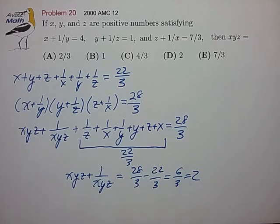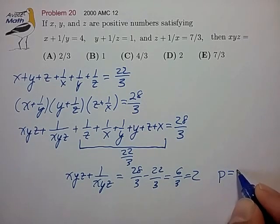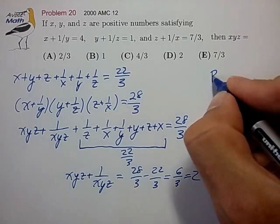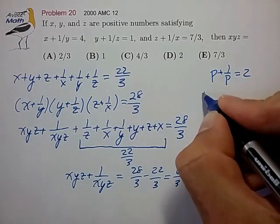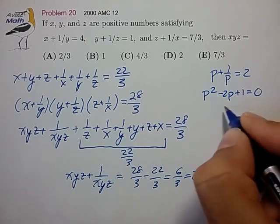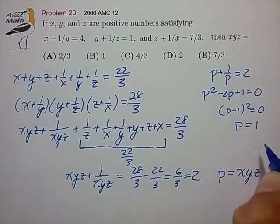If you can't actually see that, the more proper way is to make a variable substitution. Say p is equal to x, y, z. Substitute that in to generate the quadratic equation: p plus 1 over p is equal to 2. p squared minus 2p plus 1 is equal to 0. p minus 1 squared is equal to 0. p is equal to 1.